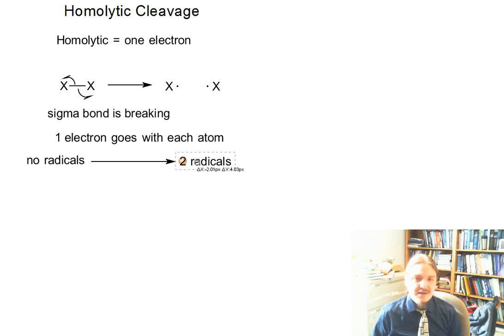And so this is a reason why homolytic cleavage is often one of the most common steps to be found in initiation, because you go from no radicals to having two radicals.